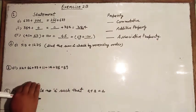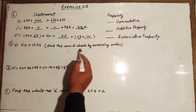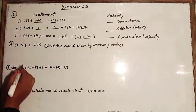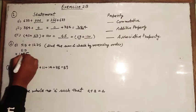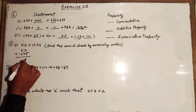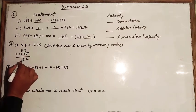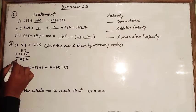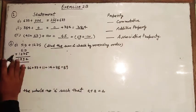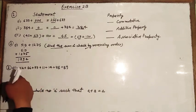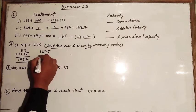Question number two: find the sum of 519 plus 1275 and check by reversing the order. First, we calculate 519 plus 1275. Adding: 9 plus 5 is 14, carry 1; 1 plus 7 is 8, plus 1 is 9; 5 plus 2 is 7; 1 as it is. The sum is 1794.